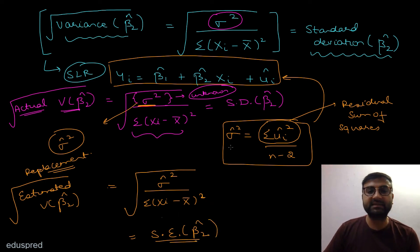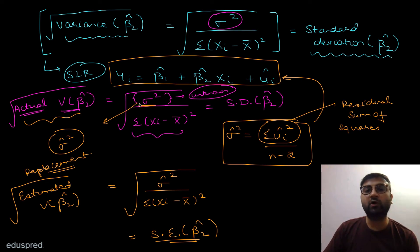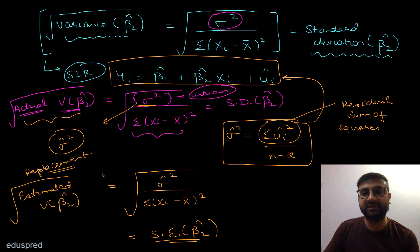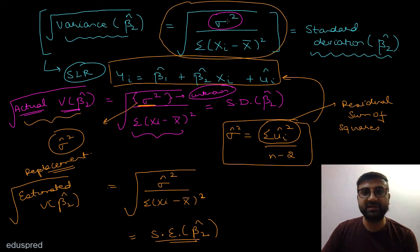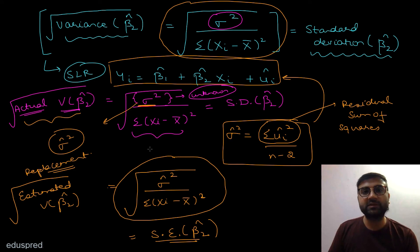This is the key difference between standard deviation and standard error. If you are able to find the actual variance, you take its square root and call it standard deviation. But since the actual variance depends on sigma square, which you can never find because you have no data on the population error, you always replace sigma square with sigma hat square. This gives you the estimated variance, and its square root is called the standard error. The standard deviation uses sigma square; the standard error uses sigma hat square. This is why you always see standard error of beta 2 hat in econometrics and never standard deviation of beta 2 hat.